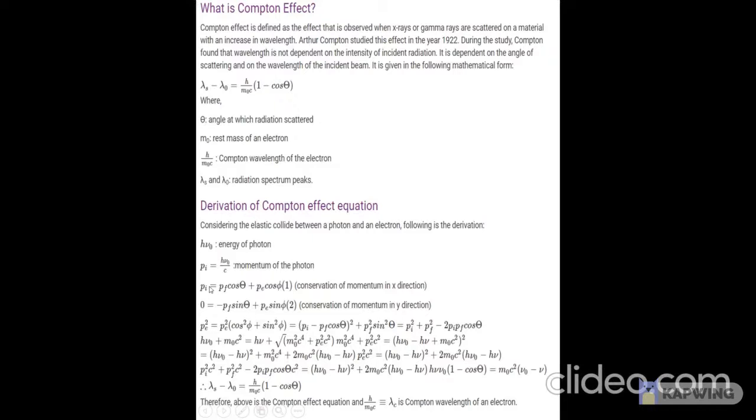After we square both equations 1 and 2 and add them, we get this equation. After further solving this equation, we get lambda s minus lambda 0 equals h by m0 c times 1 minus cos theta.